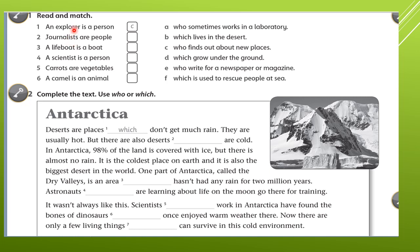Journalists — people who work in the journal. Journal is the magazine. Students keep asking me how we know whether to use '-er' or '-ist'. You have to memorize them. Journalists are people who write for a newspaper or magazine — that is their job. A lifeboat is a boat, so we use 'which'. It is used to rescue, to protect, people at sea.